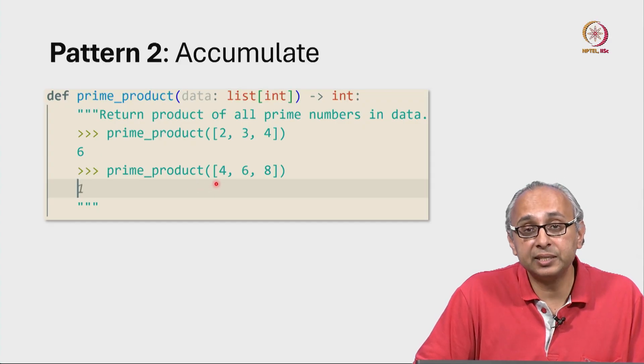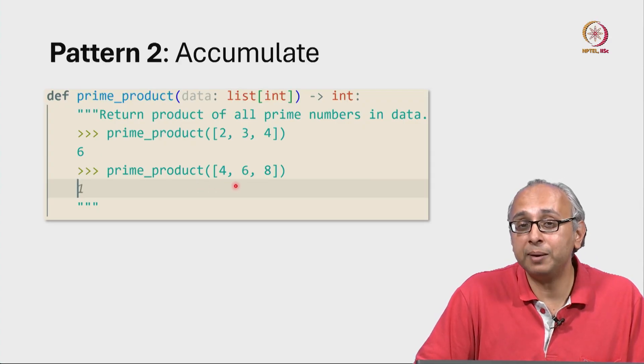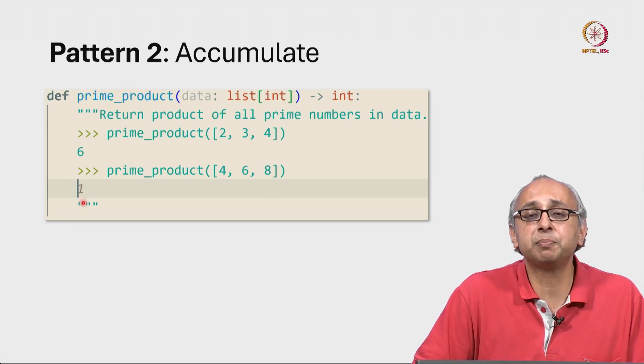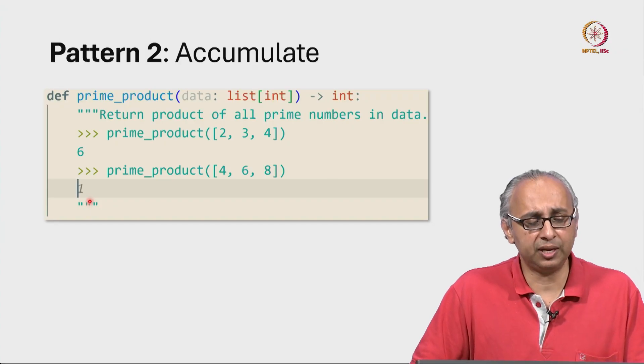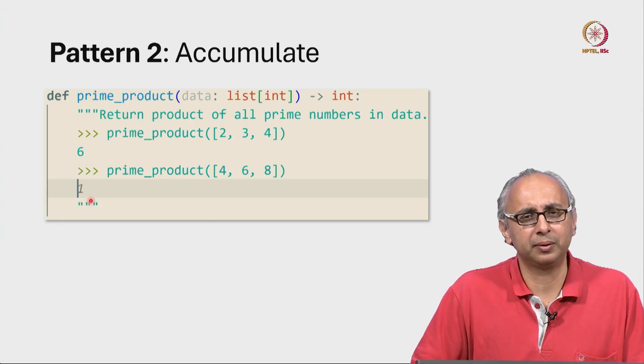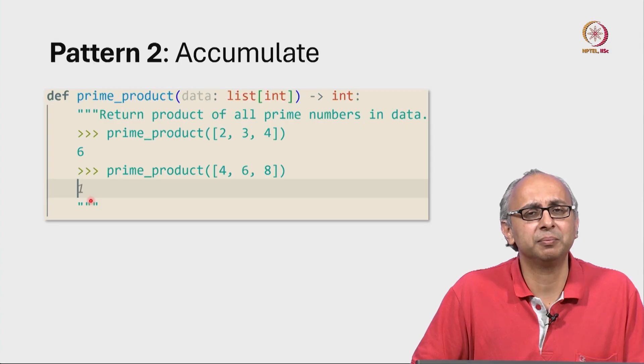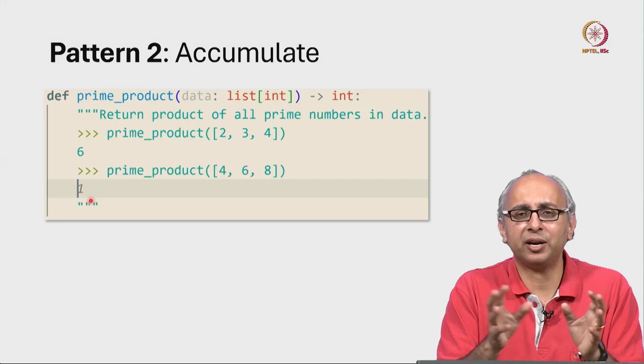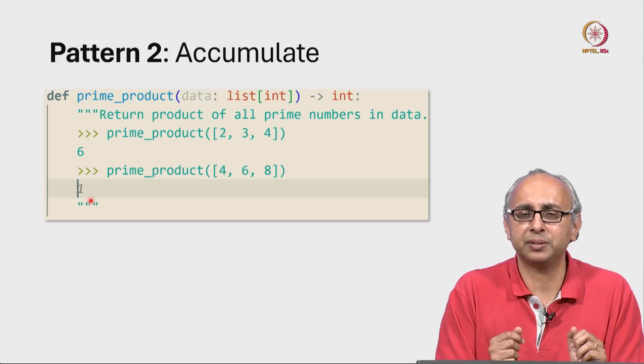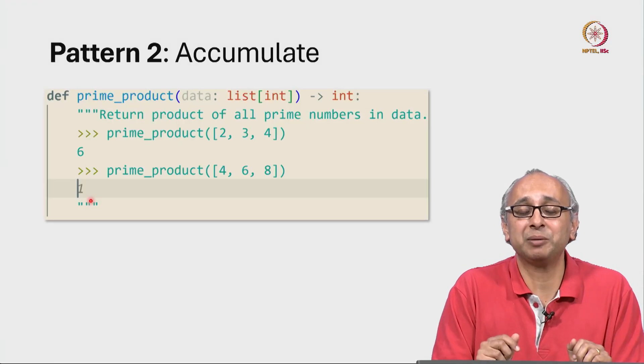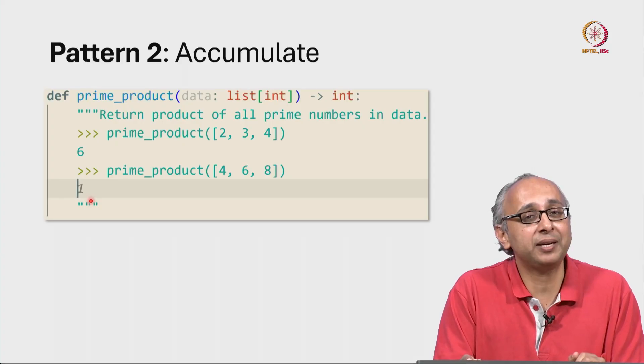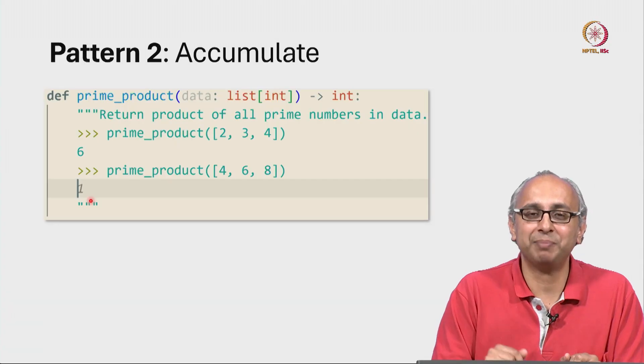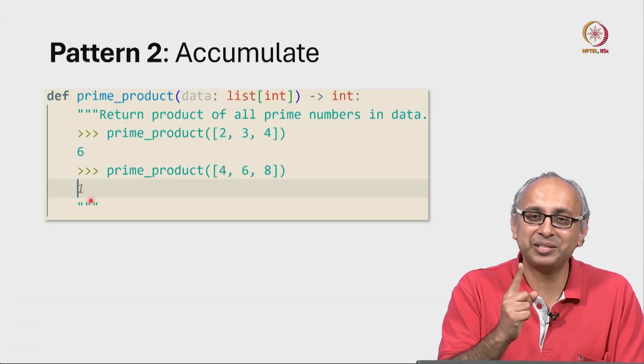And what about this list which has no prime numbers in it? When I press enter, my cursor is blinking here. My AI is suggesting the answer should be 1. Why should the answer be 1? Well think about it. We want to calculate the product of a bunch of numbers. What if there are no numbers to multiply? What is the answer you are expecting? What is the product of an empty set? Well if you ask a mathematician, they will tell you that the product of an empty set is 1.